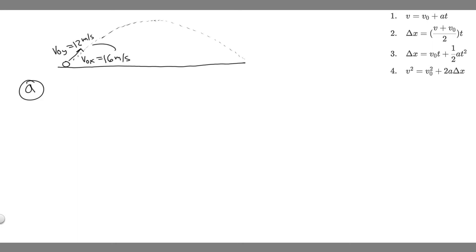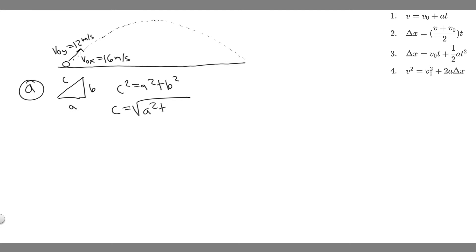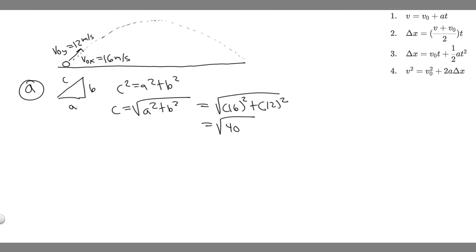To find the initial velocity, we take the resultant using the Pythagorean theorem. We have the X and Y components, so if we say A is the velocity in X, B is the velocity in Y, and C is the resultant, then C equals the square root of A squared plus B squared. That's the square root of 16 squared plus 12 squared, which gives us the square root of 400, equal to 20.